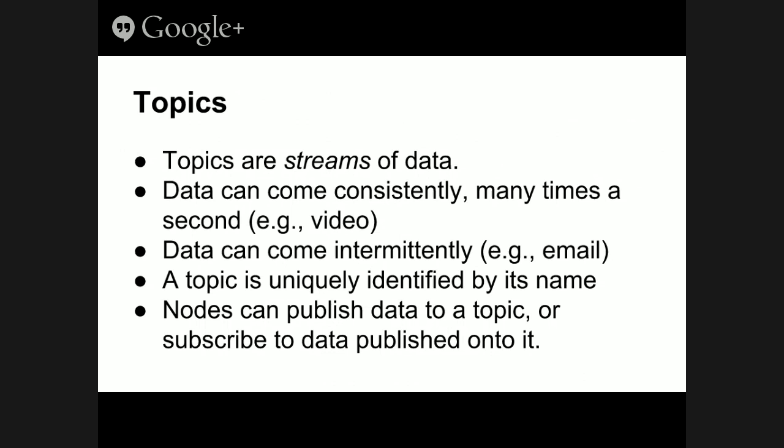Nodes can expose two basic kinds of APIs. The first is a topic — you can subscribe to read from a topic, or publish to send data out on a topic. Topics are basically streams of data. They can happen periodically, like a clock tick, or like a video stream delivering an image 30 times a second. They can also be very inconsistent — like email, where you might get a burst in the afternoon and nothing at night.